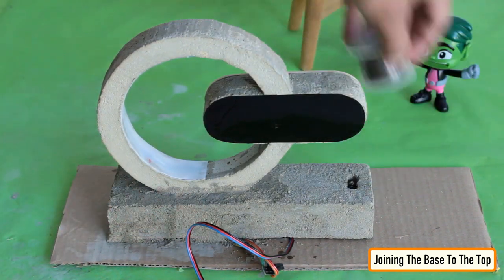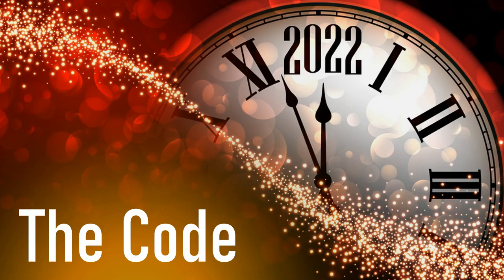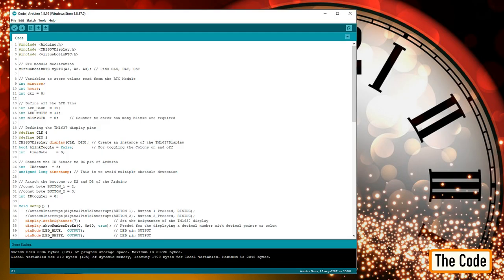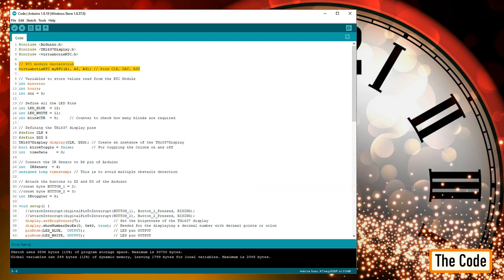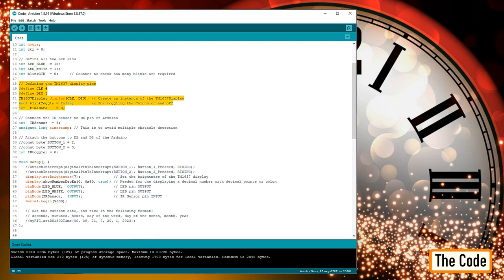For this project, you need to include the Arduino RTC library and the TM1637 display libraries in your code. You can download them from GitHub from the link provided in the description below. Let's start the code by creating an instance of the RTC module followed by defining the variables used by the RTC module. Then define all the LED pins followed by creating an instance of the TM1637 module and defining all the variables used by the module.